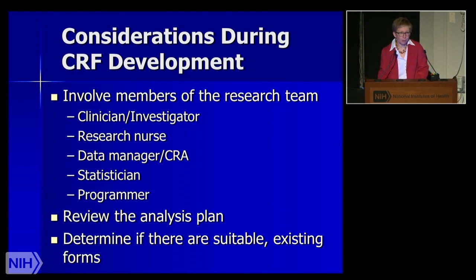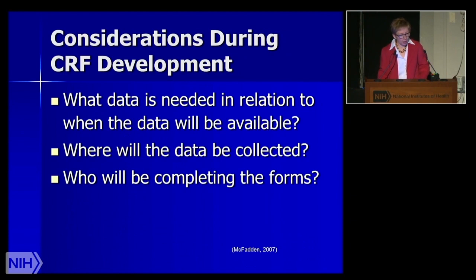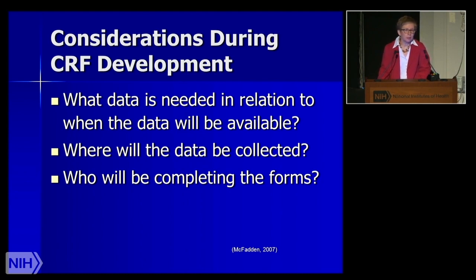Look to see if there are previous forms you could model after or even replicate and use. Consider what data is needed in relation to when it will be available, and how many people will be involved in capturing it. If information comes from both the patient chart level and from a specialist like a radiation oncologist, those are often two different areas within a research site, so consider developing two separate forms.